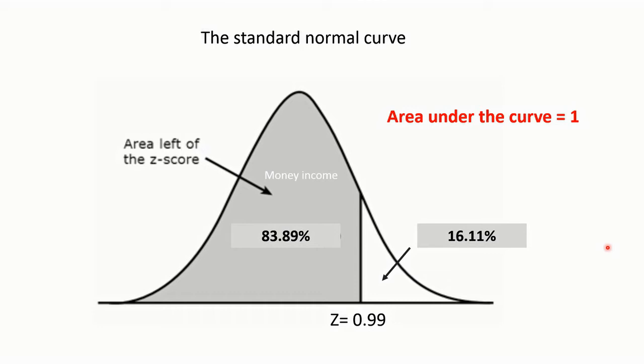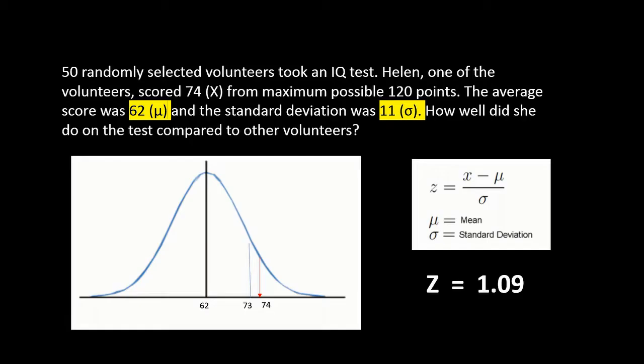Being the whole 100%, then we can say that this area has a value of 16.1%. So the tables always give us area to the left, but we can make up this area if we need to. Let's have another example.